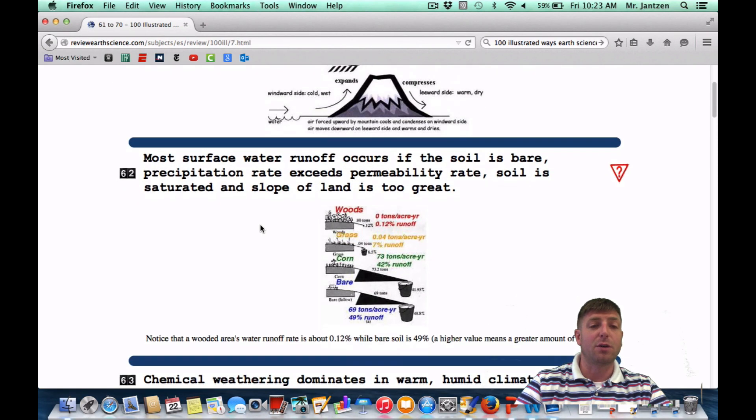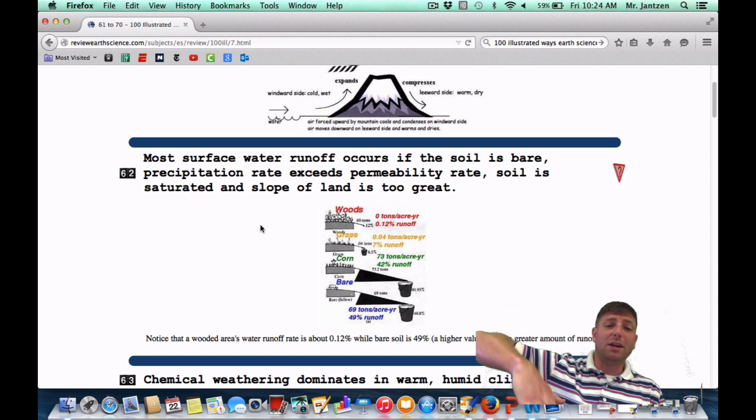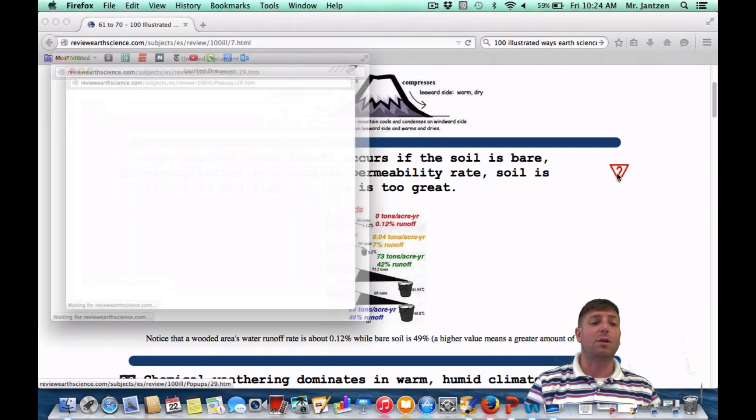Number 62: Most surface water runoff occurs if the soil is bare, precipitation rate exceeds permeability rate, soil is saturated, and the slope of the land is too great. We're talking about what causes runoff, water just running off the surface with no time to get into the soil. If it's raining harder than the soil can handle, it's going to run off. If the soil is full of water, it's going to run off. Or if the slope of the land is too steep, it's going to run off. These are all different factors that can contribute to runoff.